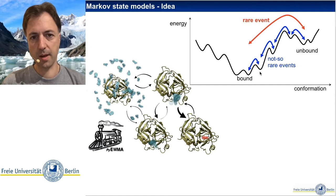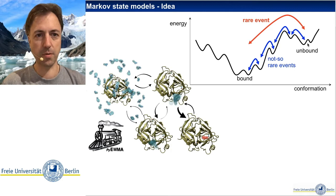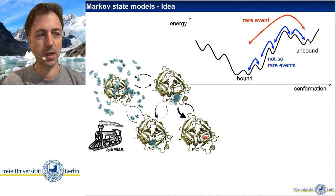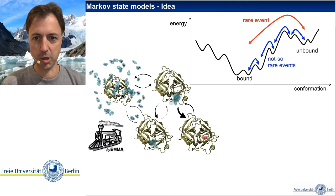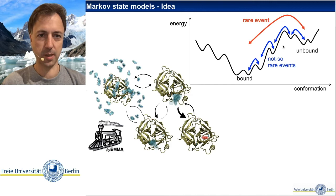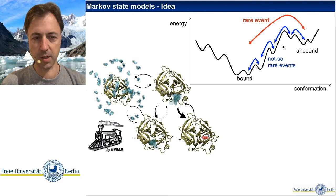There are also often many not-so-rare events traversed on the way, and the hope is that with a simple dynamical model such as a Markov state model we can describe the transitioning between these substates. We have to identify what the slow processes and rare events are based on simulation data, and partition this high-dimensional simulation trajectory into the relevant substates. This problem arises not only in molecular dynamics but in essentially every dynamical system.